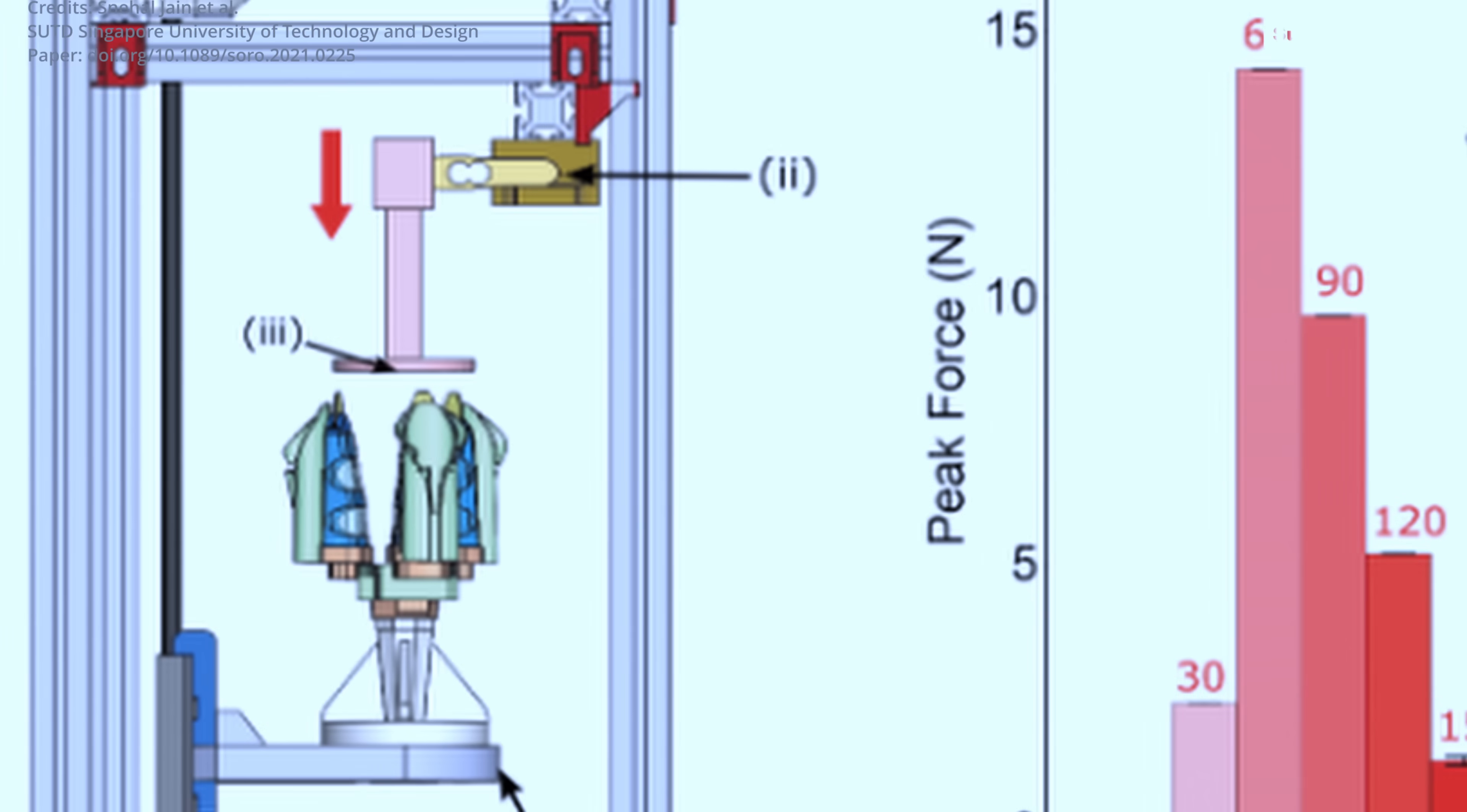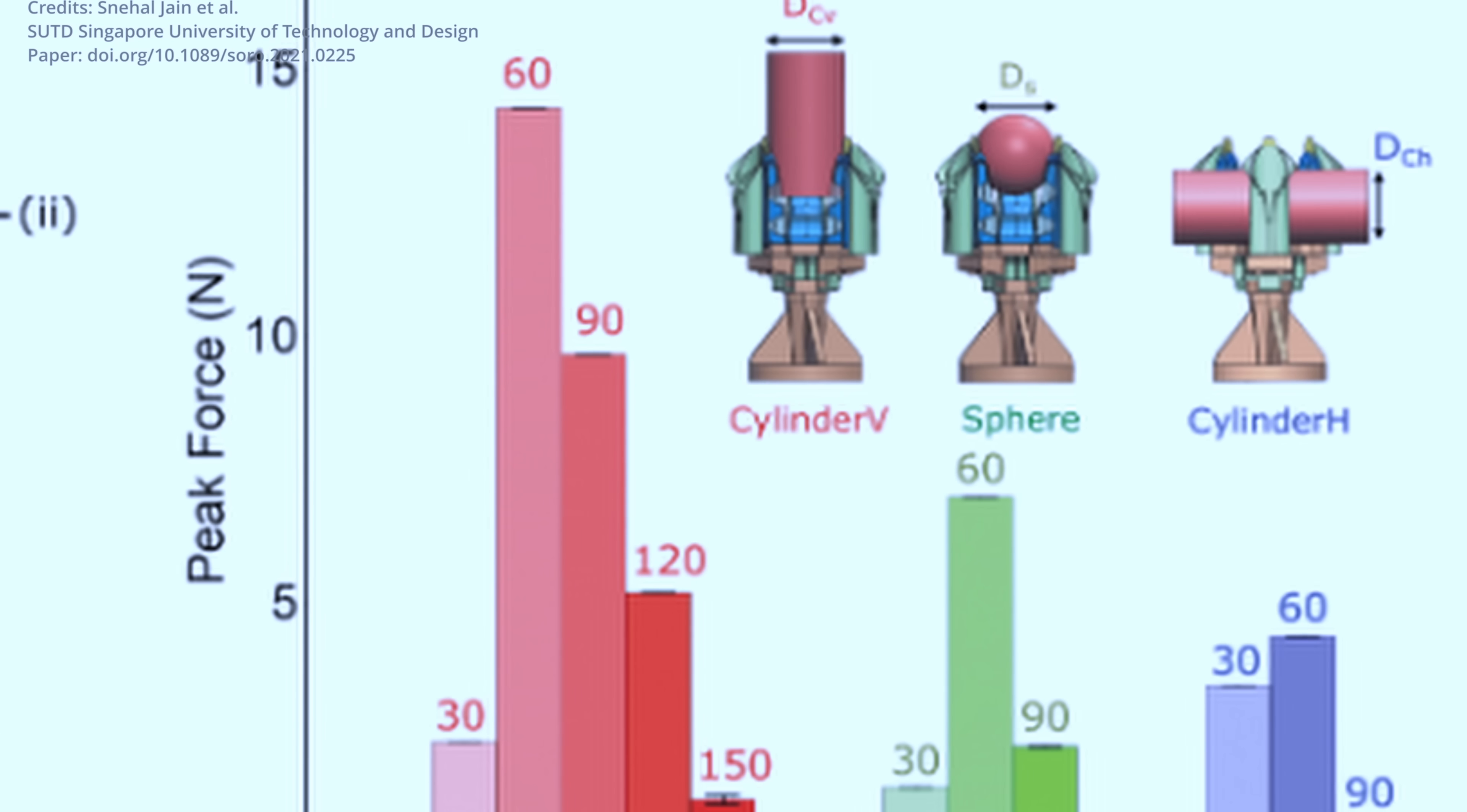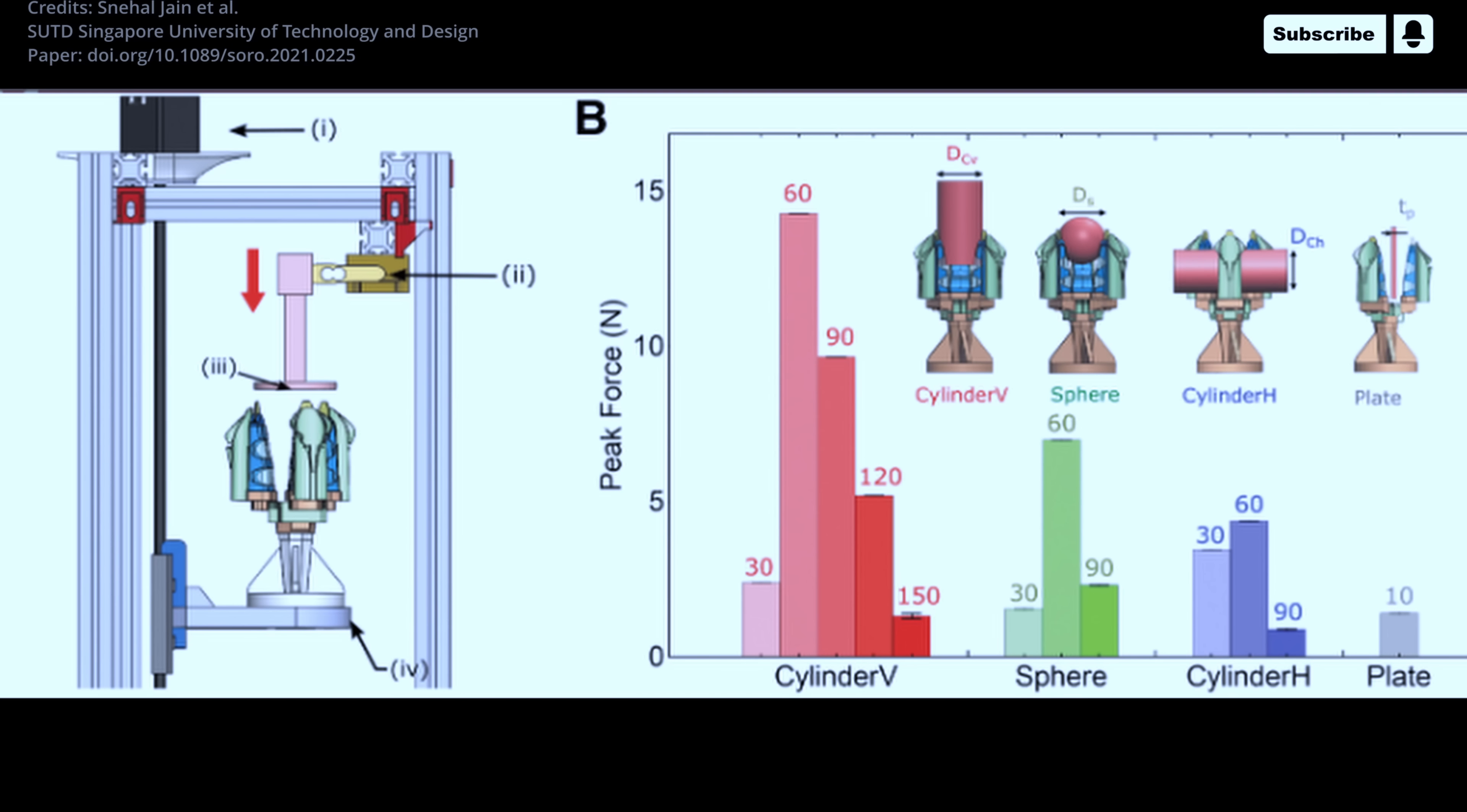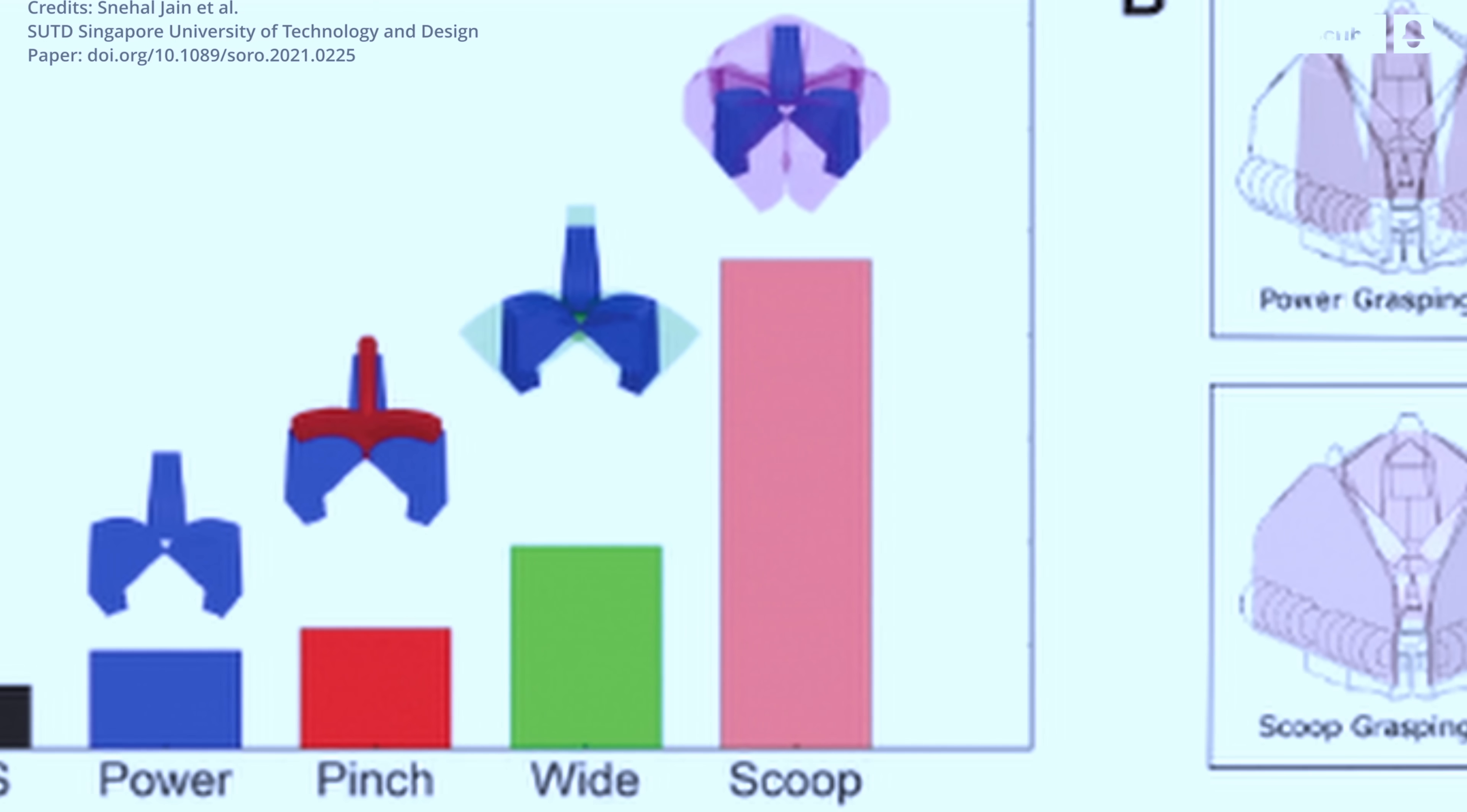The research team is working towards making the RWS gripper commercially available for various high mix automation applications. The robotics researchers are in talks with various logistics companies, both in the food and packaging sectors, to conduct proof of value studies.